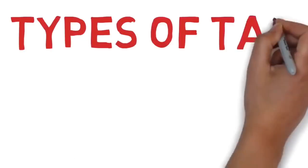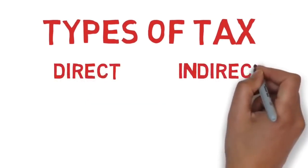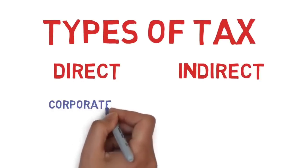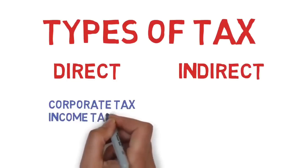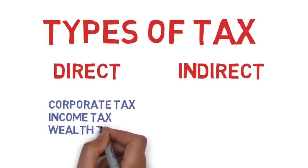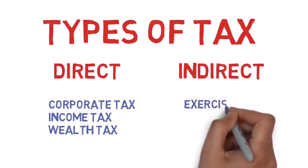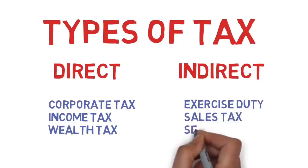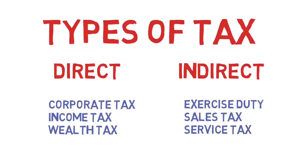There are actually two types of taxes. One is direct tax and the other is indirect. The direct tax is one whose liability cannot be shifted to someone else, like corporate tax, income tax, wealth tax etc. But indirect tax is the tax whose liability can be shifted to someone else — it includes central excise tax, sales tax, services tax etc.